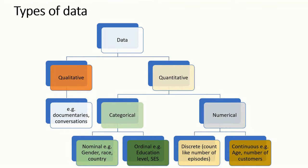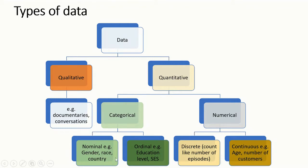Then we have categorical data. In categorical data we have ordinal — that means it is ordered in a way that makes meaning. For example, education level: someone in secondary is better than someone who finished primary, and someone at university undergraduate is better than secondary in terms of knowledge. Then we have nominal — this one doesn't have any order in the grouping. For example, gender: you can't say females are better than males. We have race, and we have countries. Those are categorical and nominal.